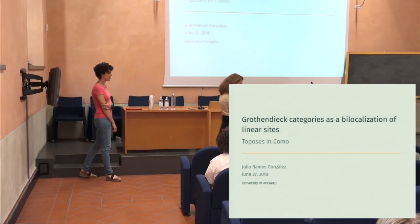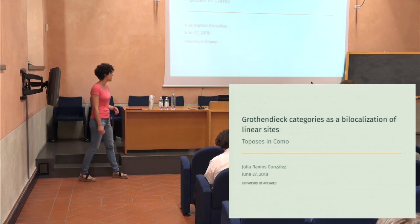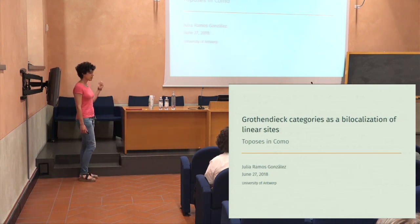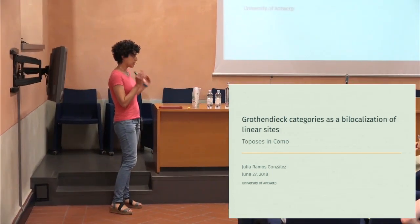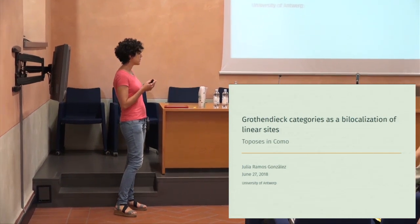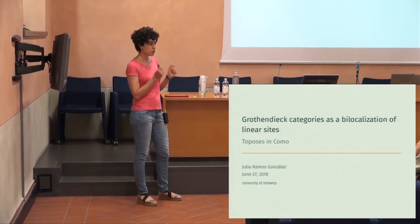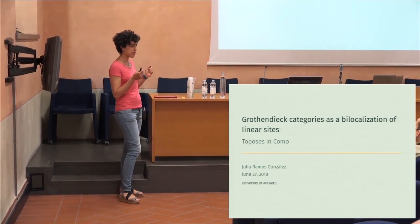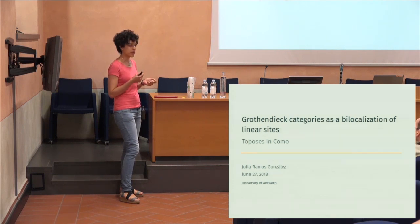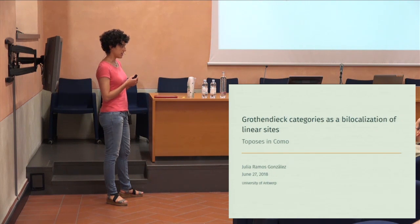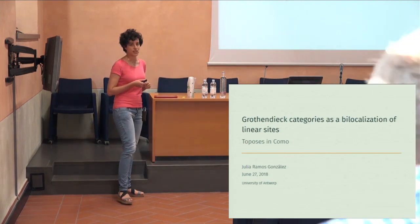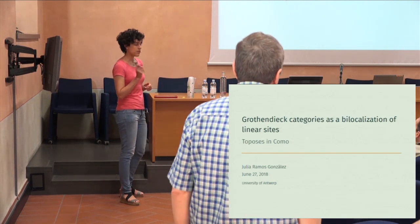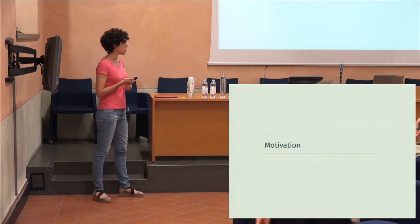First of all, thank you very much to the organizers for giving me this opportunity. The result I'm going to talk about is very easily stated. I'm going to show that certain two-categories of Grothendieck categories can be realized as a bi-localization, specifically as a bi-category of fractions of a category of linear sites. I will do this for two different two-categories of Grothendieck categories and two different two-categories of linear sites.